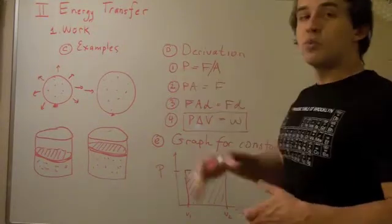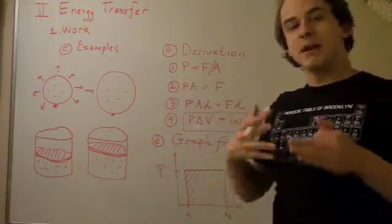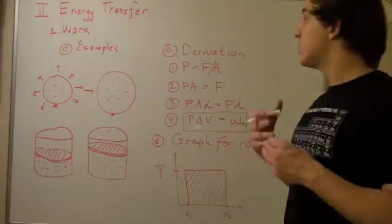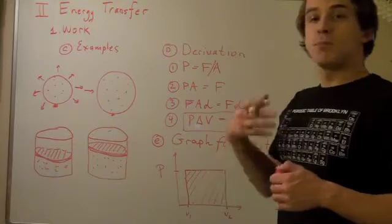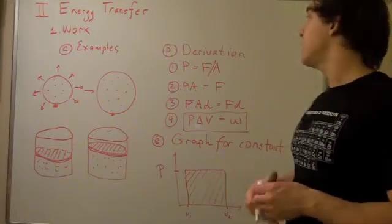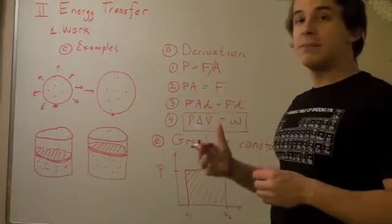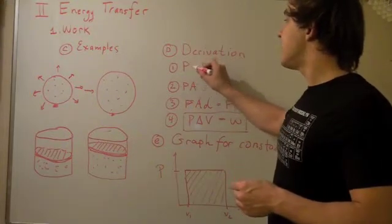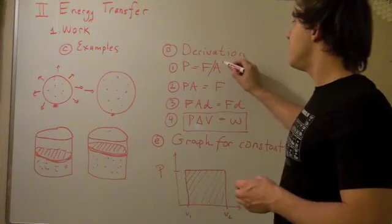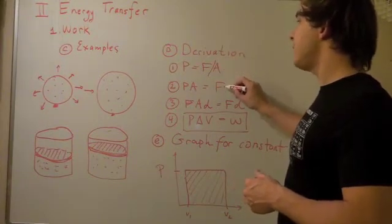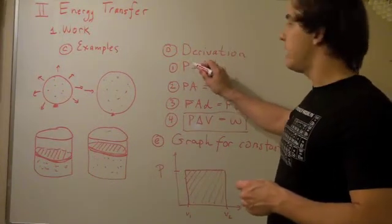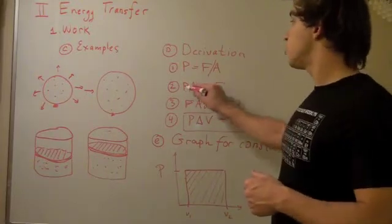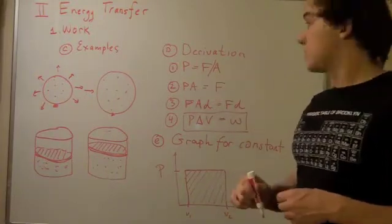We start with pressure. When we talk about chemistry and chemical systems, we talk about pressure, and pressure is force per unit area. What happens if we multiply both sides by A? If you multiply this side by A, the A's cancel out and we get F. If you multiply this side by A, we get PA. So force is equal to pressure times area.